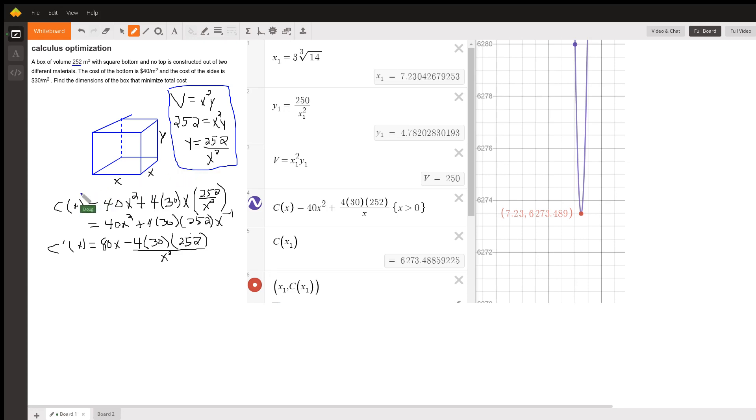But then it's the cost function that we have to create and then hopefully minimize, so the cost function says that the cost of the base is $40 per square meter. Well, if each side is x meters, then there's x squared square meters in the base multiplied by 40.